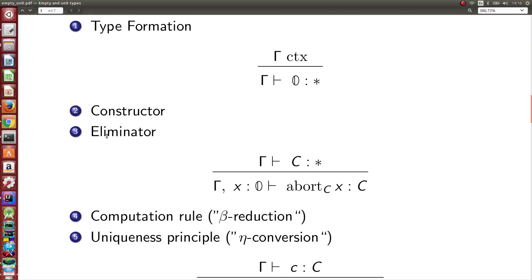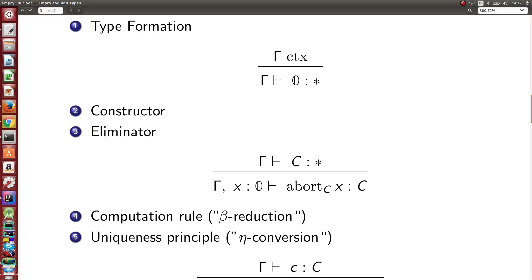The next rule is the eliminating rule, which can be used for pattern matching. In every context gamma, if C is a type, then we can match on variable x of empty type. There are no values of empty type, but we can always consider a variable of this type. We denote the eliminator from empty type to type C as "absurd".